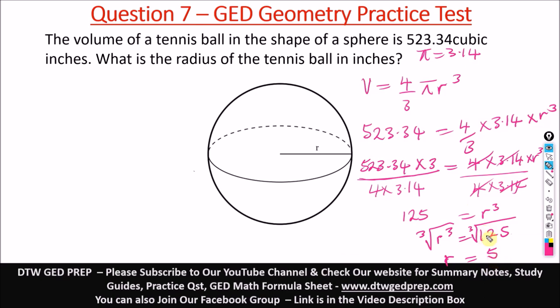For you to learn further. So the cube root of 125, when you use your GED calculator, you will get 5. So our radius here is 5 inches.